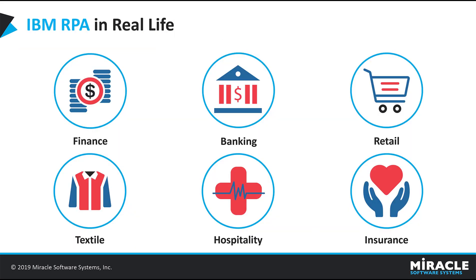Now let us move on to IBM RPA in real life. These are the areas where IBM RPA comes into picture: Finance, Banking, Retail, Textile, Hospitality, and Insurance. For example, in Banking we have many withdrawals and deposits, which is a repeatable task, so we can use IBM RPA. In Retail and Textile, we can generate invoice bills automatically using IBM RPA.